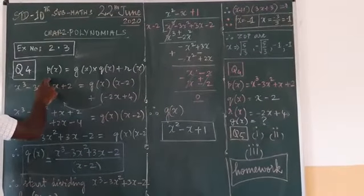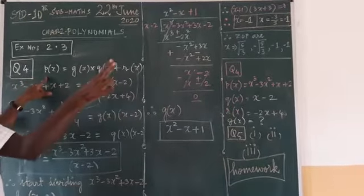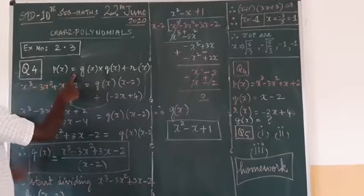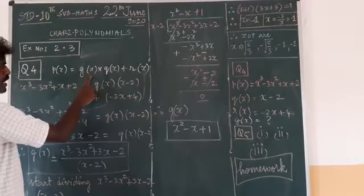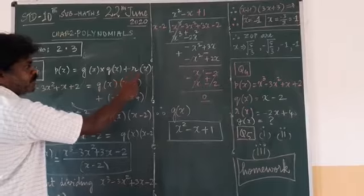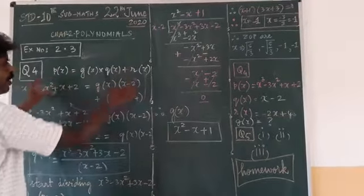I am writing the standard form of the equation. What is the standard form? P of X equals G of X, divisor polynomial, into quotient, plus remainder polynomial. This is the standard form.